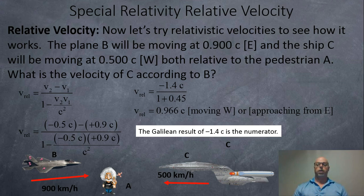Now let's try it relativistically. The plane is moving at 90% the speed of light, or 0.9 C, and the ship is moving west at 0.5 C. We're going to use the relativistic formula this time: negative 0.5 C subtract positive 0.9 C, over 1 subtract negative 0.5 C times 0.9 C over C squared. The Cs cancel out. 0.5 times 0.9 is 0.45, and a negative negative makes a positive. Notice the top would be the Galilean value. Galileo would say it was negative 1.4 times the speed of light, but we know the speed limit is the speed of light. Our relative velocity is going to be 0.966 C moving west or approaching from the east.